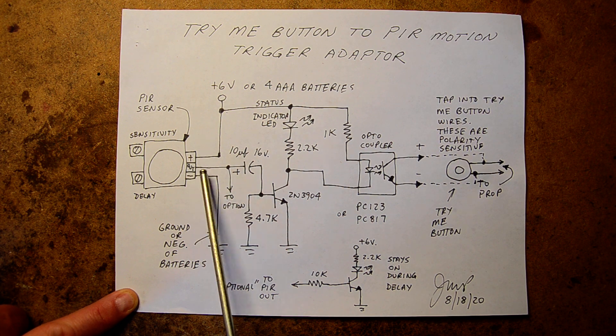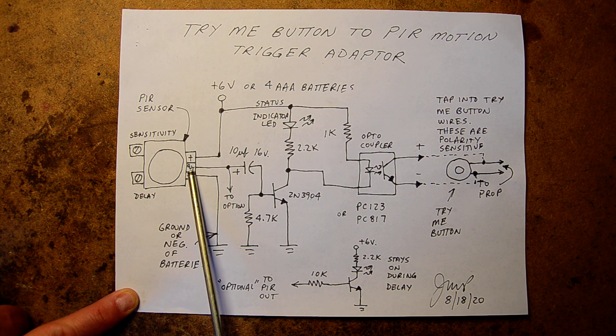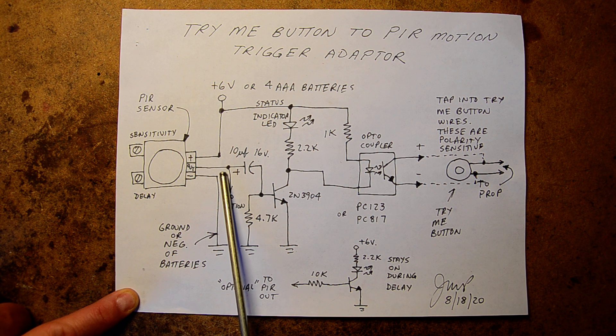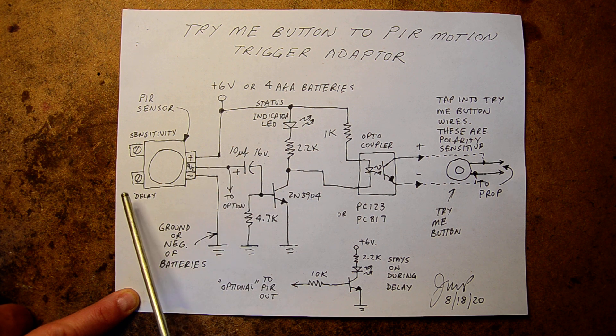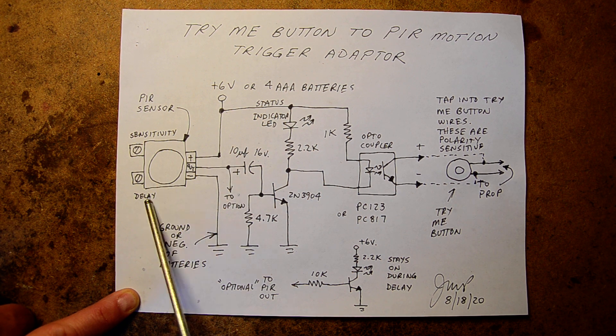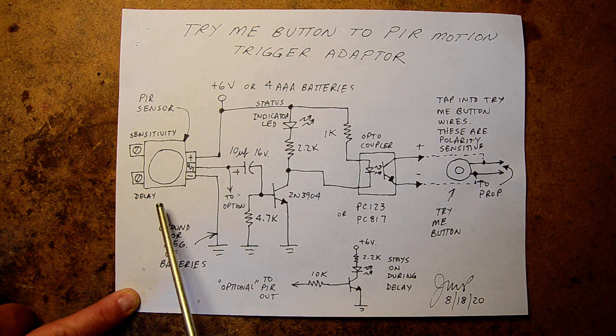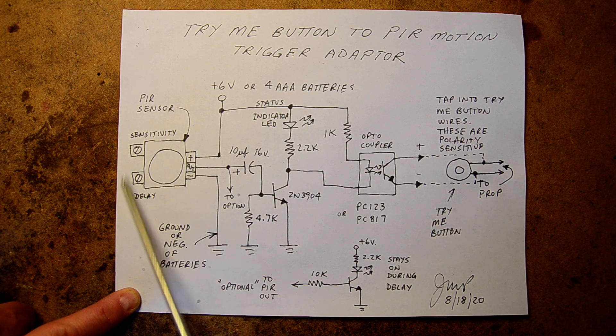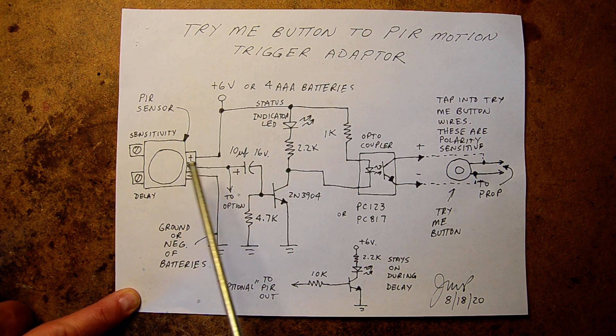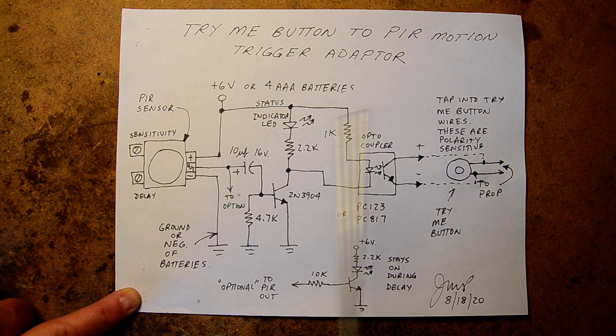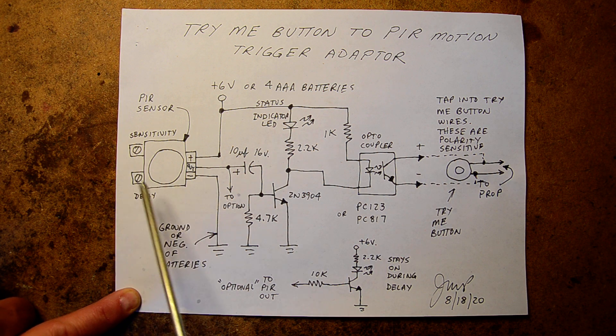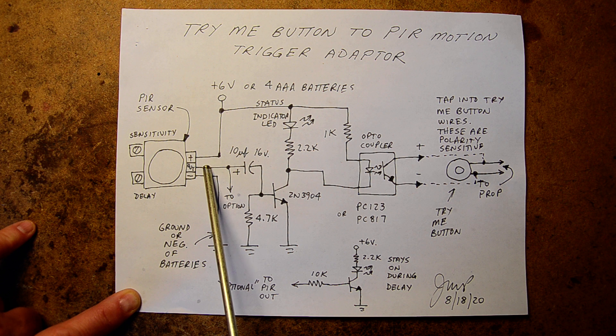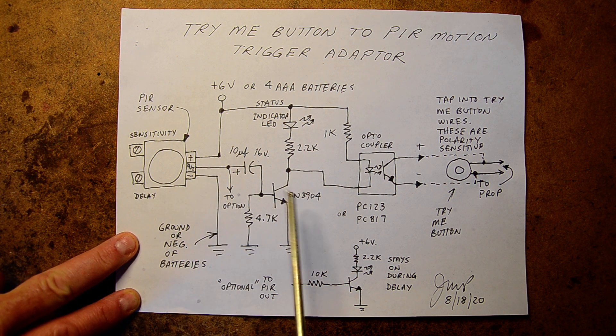The output of the PIR sensor puts out a 3.3 volt positive pulse, and that pulse will stay high based on how long this delay is set. This delay can be set from two seconds up to three minutes. I'm using the timer built into this to be my pause between shows of my zombies, which I mentioned in my last video. I have mine set for 45 seconds, so this will stay at 3.3 volts for 45 seconds.